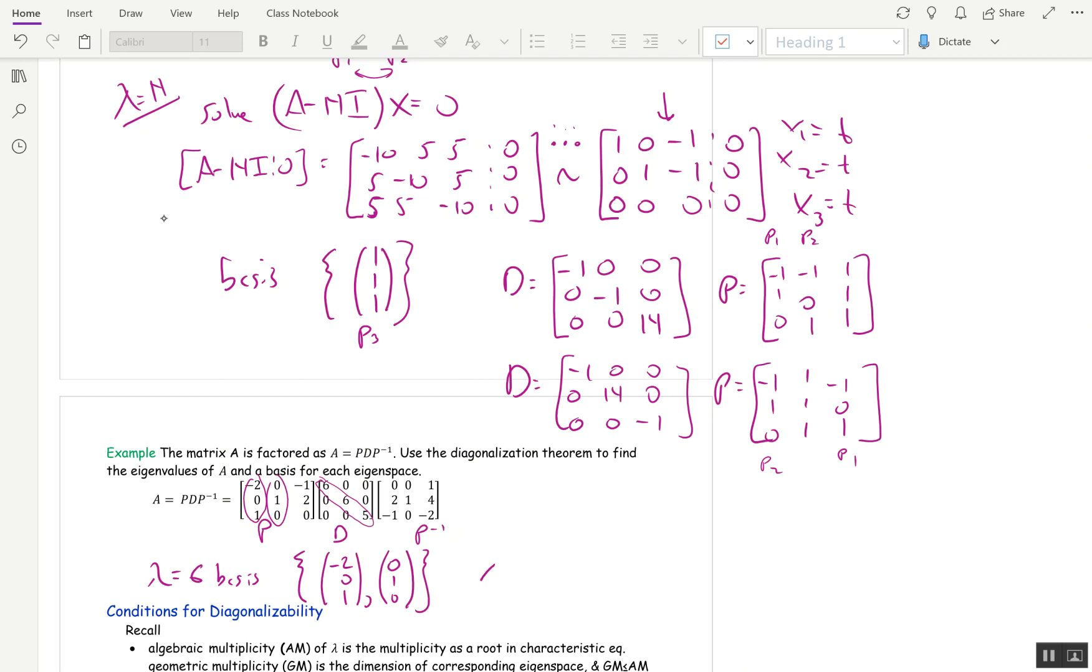And then for lambda equal 5, which is our last eigenvalue, a basis for the eigenspace is this third column of P: negative 1, 2, 0.